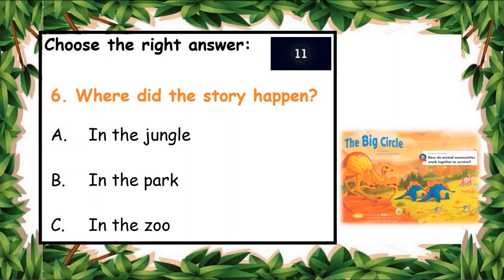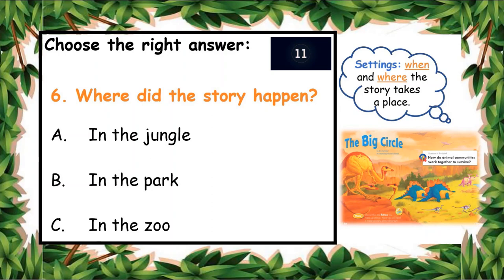The next question: where did this story happen? The question is about the setting. When is about the time, where is about the place. So where did this story happen? A: In the jungle, B: In the park, C: In the zoo. You have ten seconds to answer. A: In the jungle. Yes, in the jungle! Good job.